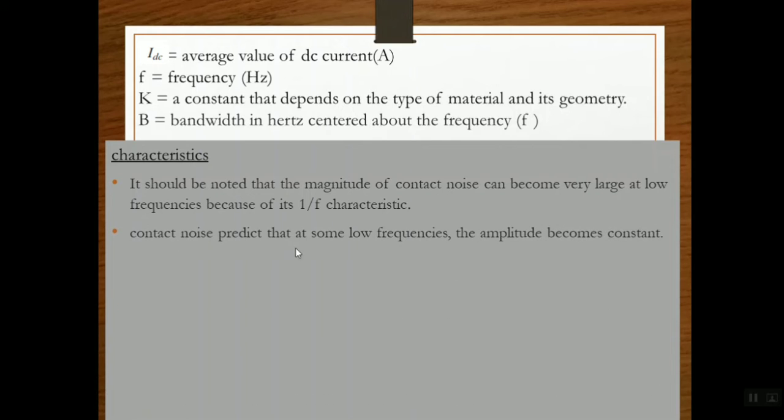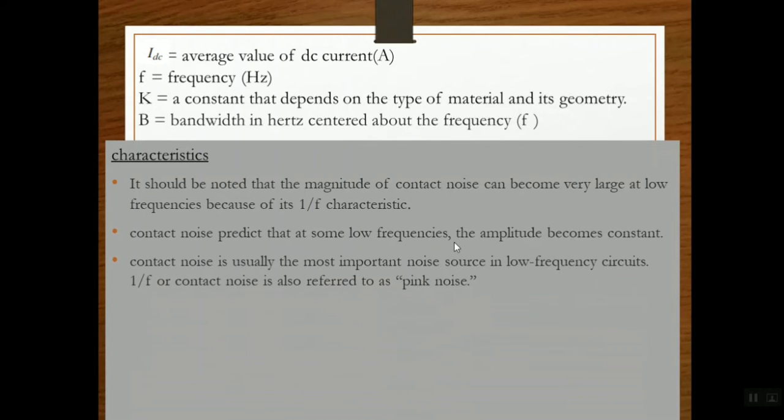Contact noise predicts that at some low frequencies, the amplitude becomes constant. Contact noise is usually the most important noise source in low frequency circuits because of its characteristic, that is 1/f.